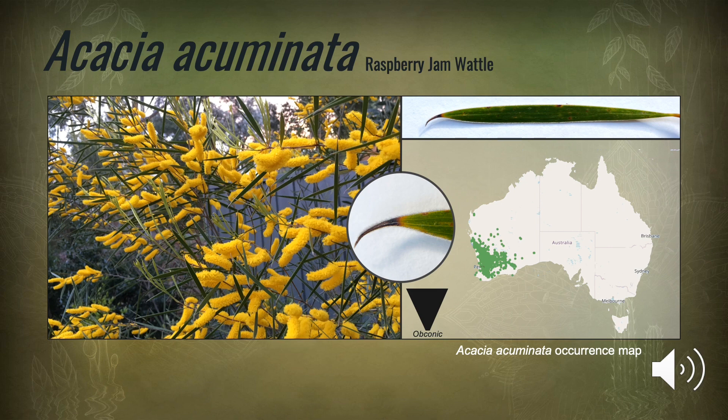Widely distributed throughout southwest Western Australia, Acacia acuminata can be found in semi-arid woodlands, shrublands on clay soils and red sands, often near streams and granite outcrops.